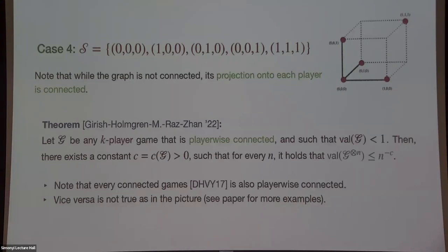What we prove is that for any K-player game — with no restriction on binary inputs or outputs — if you have the player-wise connected property, you get polynomial decay. Note that if the original connection graph is connected, then each projection is also connected, so player-wise connected is a strictly weaker (more general) condition. The paper has many more examples, including a nice example about random 3-CNFs.